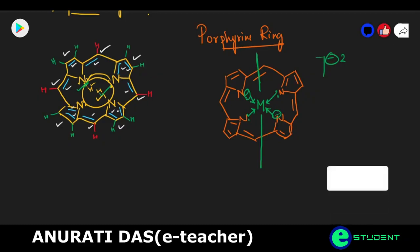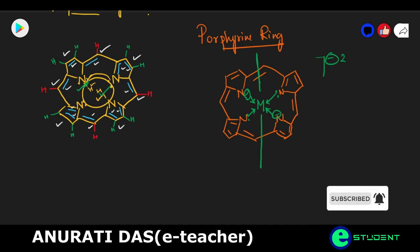Now we have a basic concept about the porphyrin ring. In the next class we are going to discuss metal porphyrins — that is, hemoglobin, myoglobin, cytochromes, hemocyanin, etc. Thank you.